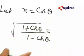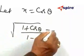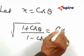2 and 2 will get cancelled. Cos theta by 2 by sin theta by 2, that is equal to cot theta by 2.